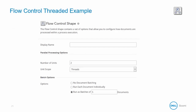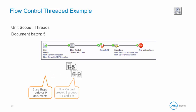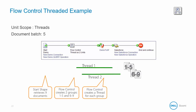This is a screenshot of the flow control shape. You can see the number of units is set to 2 and the unit scope is set to threads, running them as batches of 5 documents each. In this example, the start shape receives 9 documents. Because of the 5-document batch setting, the flow control creates 2 groups and a different thread for each group. They flow concurrently through the process and are sent to Salesforce at roughly the same time.